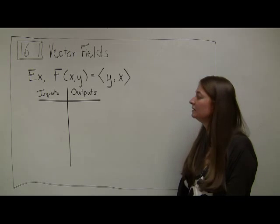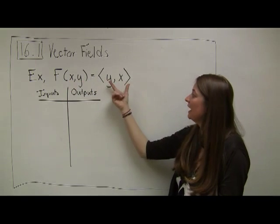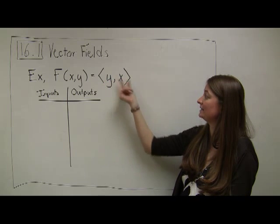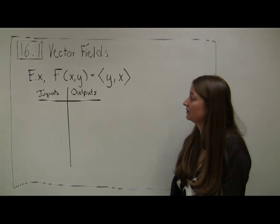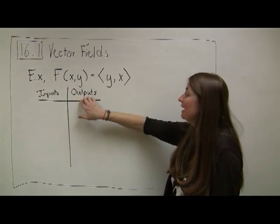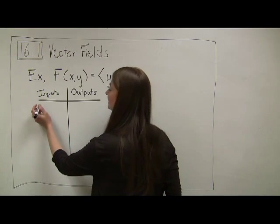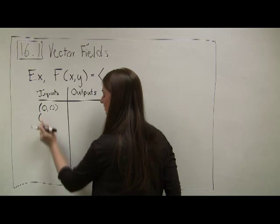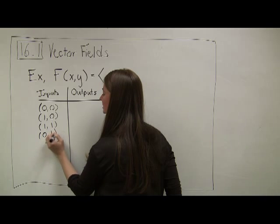For this example, let's look at a vector function where my inputs are in R2. So my points have x and y coordinates, and my output is a vector. And in this case, the vector is given by a first component equal to y and a second component equal to x. We're going to analyze graphically what this vector field looks like. In order to analyze it, we're going to start just by plotting some points. I'm going to plot inputs, which are points, and outputs, which are going to be vectors. So let's select a nice selection of input points. Typically, I'm just going to go around in a circle.